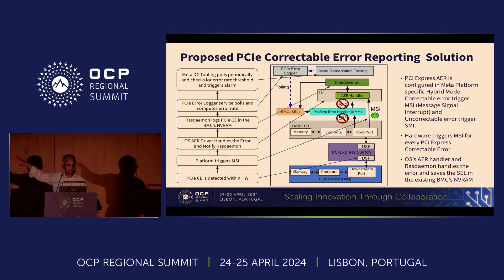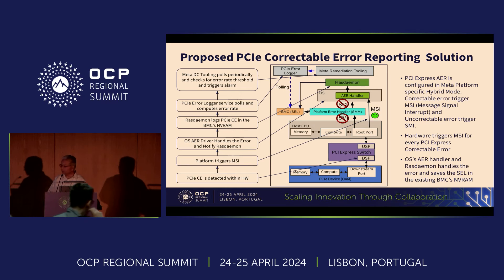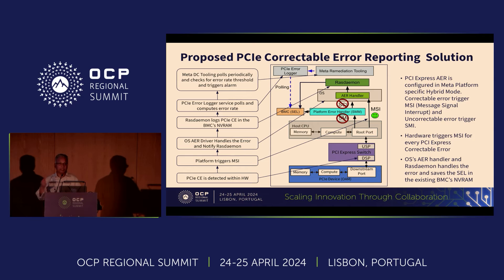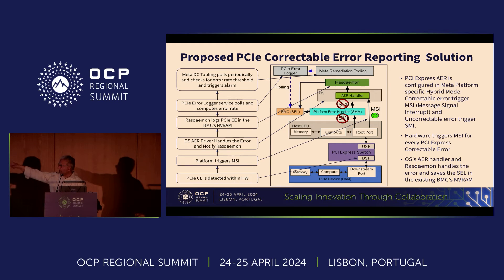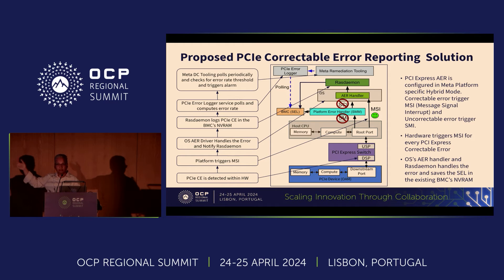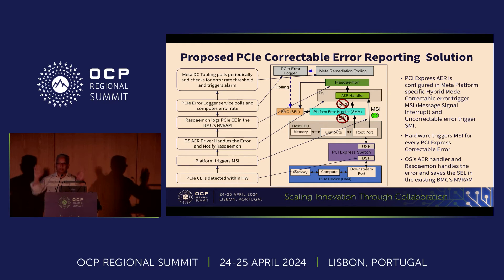Once you do that, the next challenge we faced was that we still have to log the error into the BMC cell log — the orange color box — because that's a persistent storage space. When we deploy the systems, we have to make sure that any kind of error that happens is saved, and the log is saved in a persistent space. Previously, the firmware — the SMM — was doing the cell logging, which was easy, a platform-based solution. Once we move to the OS, how does the OS write to the BMC? There's no direct path. So we decided to use RAS daemon — the dark green color — which is open source software. We modified it, upstreamed the change, and that's the solution we came up with.